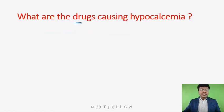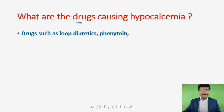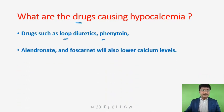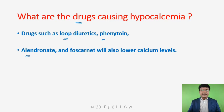The drugs that cause hypocalcemia include loop diuretics, which cause excretion of calcium; phenytoin, an anti-epileptic drug; alendronate, a bisphosphonate, which inhibits osteoclastic activity and bone resorption, thereby causing hypocalcemia; and foscarnet, which also lowers calcium levels. So: loop diuretics, phenytoin, alendronate, and foscarnet.